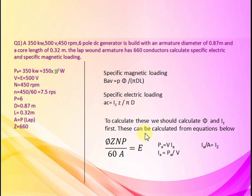To calculate these, we should calculate Phi and Iz first, because other parameters are given in the question. Only Phi and Iz are unknown. These can be calculated from equations below.